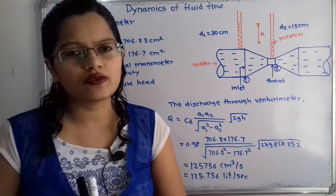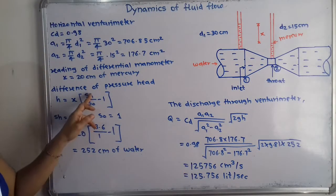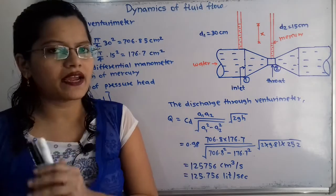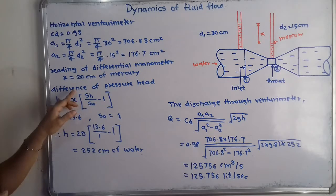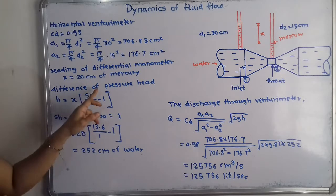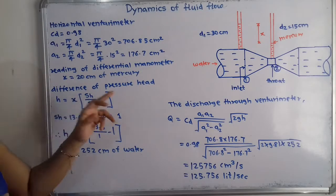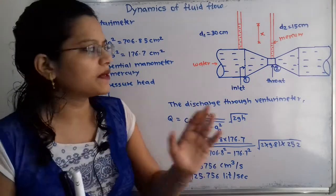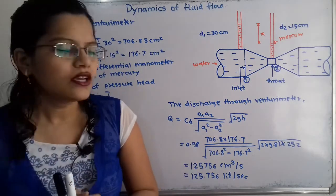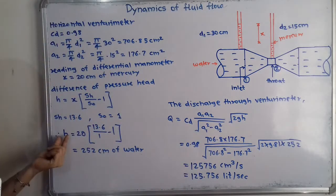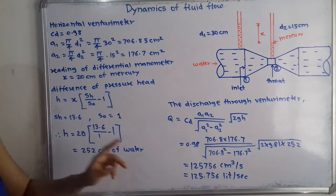If a lighter liquid were used in the manometer, the formula would be h equals x times (1 minus Sl/So). But in this case, mercury — the heavier liquid — is used, so applying the formula we get h equal to 252 centimeter of water. The unit is centimeter because x was taken as 20 centimeter.